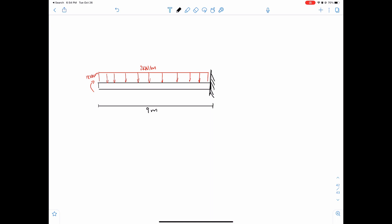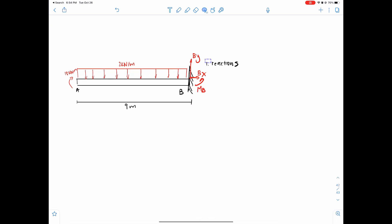First thing to do, always solve for reactions. Reactions, what are they? Can you identify them? Pause the video to find out. Alright, so let's suppose we just call this point A and call this point B. There's By, Bx, and then finally, let's assume counterclockwise as positive, so we got moment about B. Those three are your reactions. Fixed supports always have three.